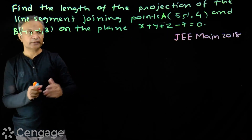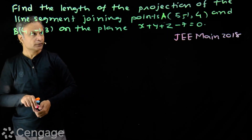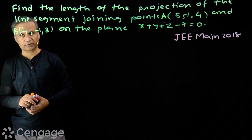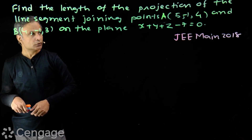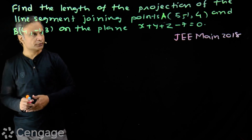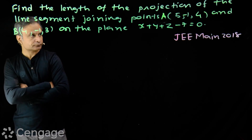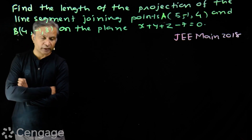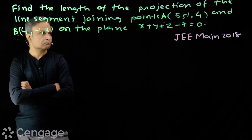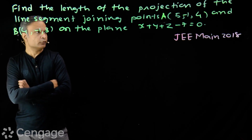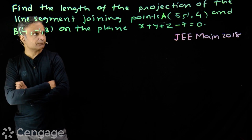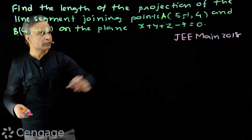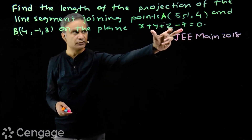We will be considering orthogonal projection. What we do here is first draw the diagram. For that, we first check the positions of points with respect to the plane. We put the coordinates of points A and B in the plane expression.